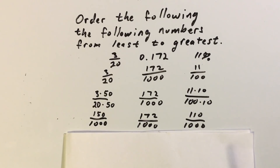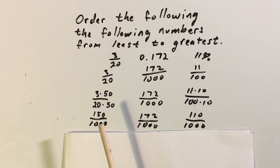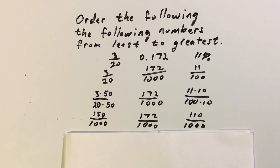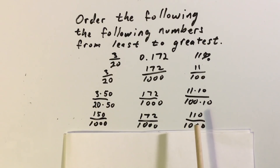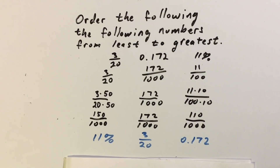Here are my conversions. I turned three-twentieths into thousandths, and that turns out to be a hundred and fifty thousandths. A hundred and seventy-two thousandths stayed the same. And eleven percent in thousandths turns out to be a hundred and ten thousandths. Now I can see the order: eleven percent is actually smaller than the other numbers, so eleven percent comes first, three-twentieths comes second, and a hundred and seventy-two thousandths is last. And there is my final answer.